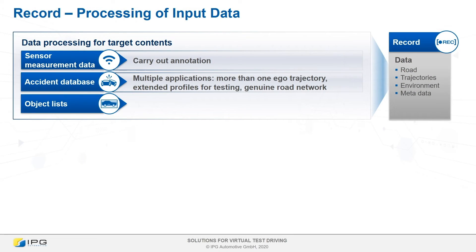Next, I would like to talk about accident databases. We support various national and regional databases. Another interesting aspect here is that these data often enable us to carry out different applications directly. On the one hand, we can put ourselves directly into the position of each of the involved accident participants, which is interesting when the accident-causer cannot be clearly identified. Furthermore,